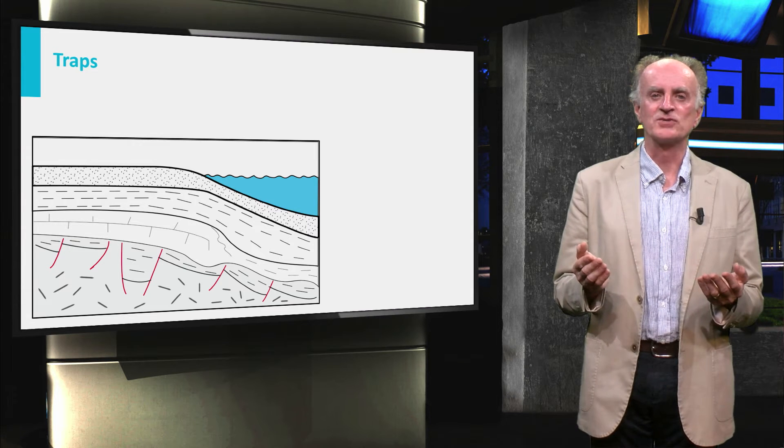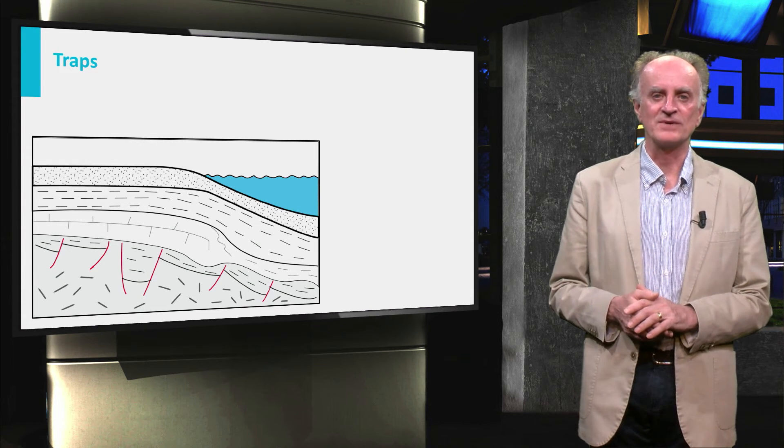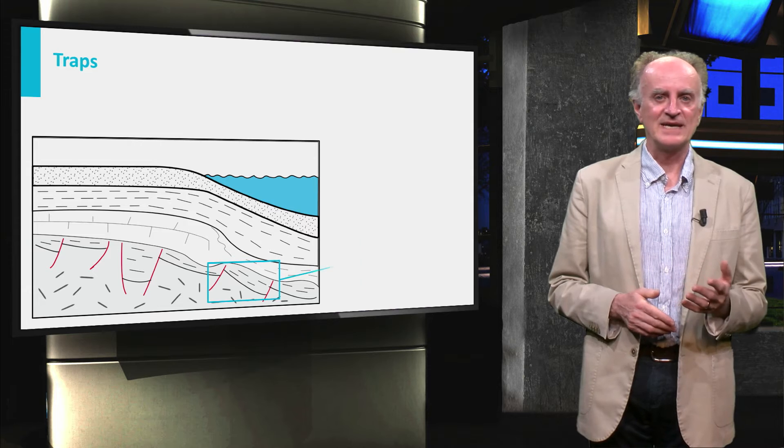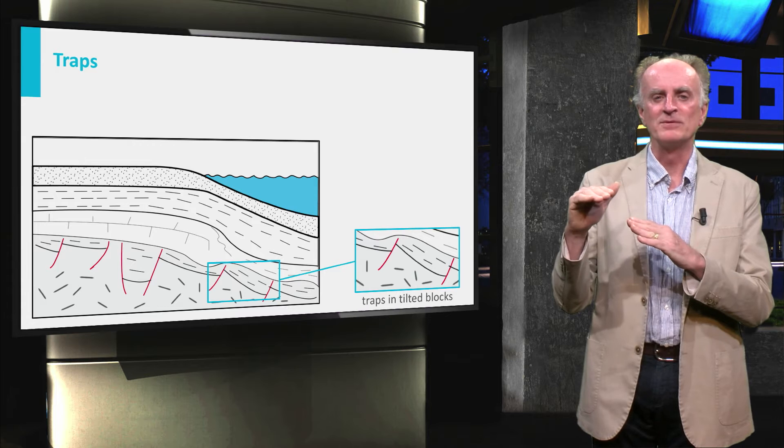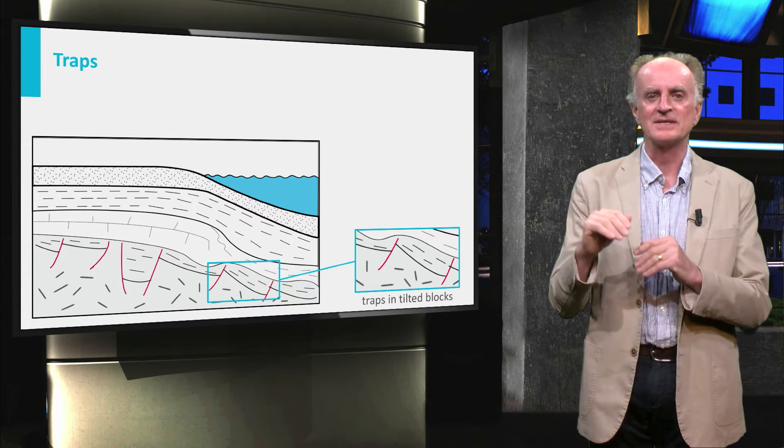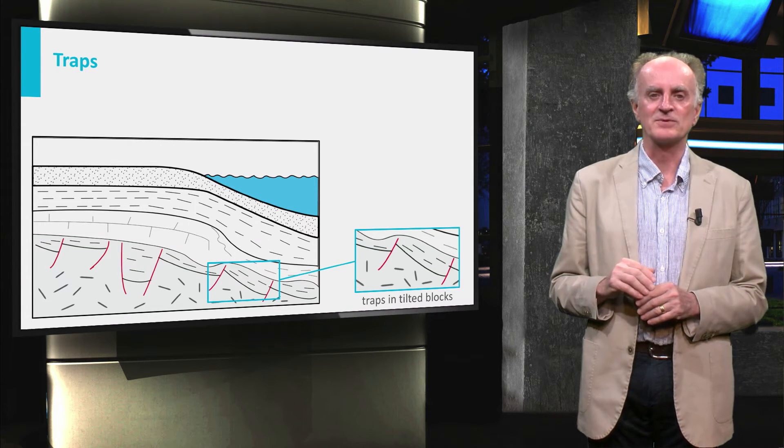Rift systems, such as the one shown, have various potential reservoirs. The first type is associated with the tilted blocks with a seal formed by the unconformable fine-grained rocks deposited during the initial stages of the post-rift.